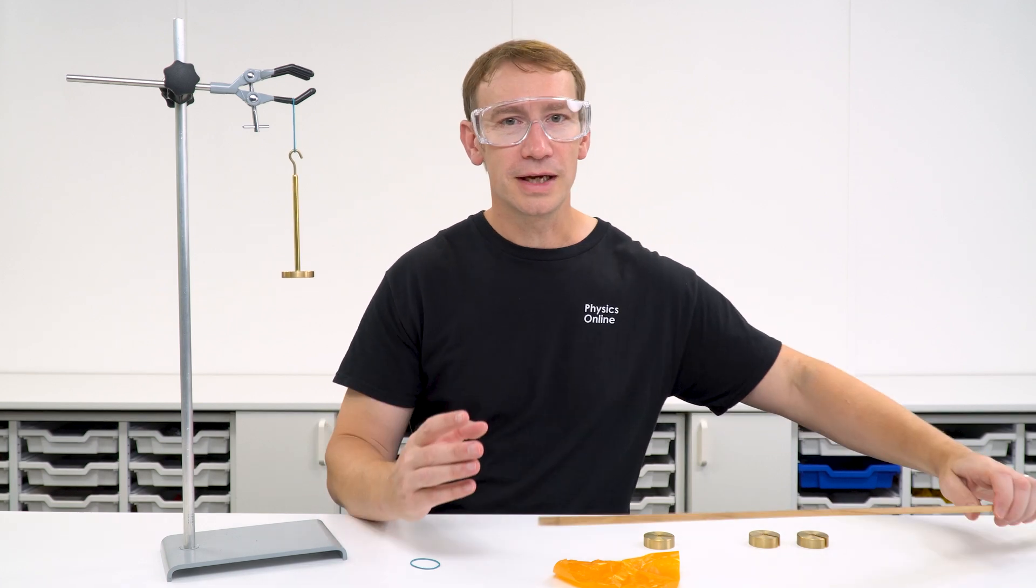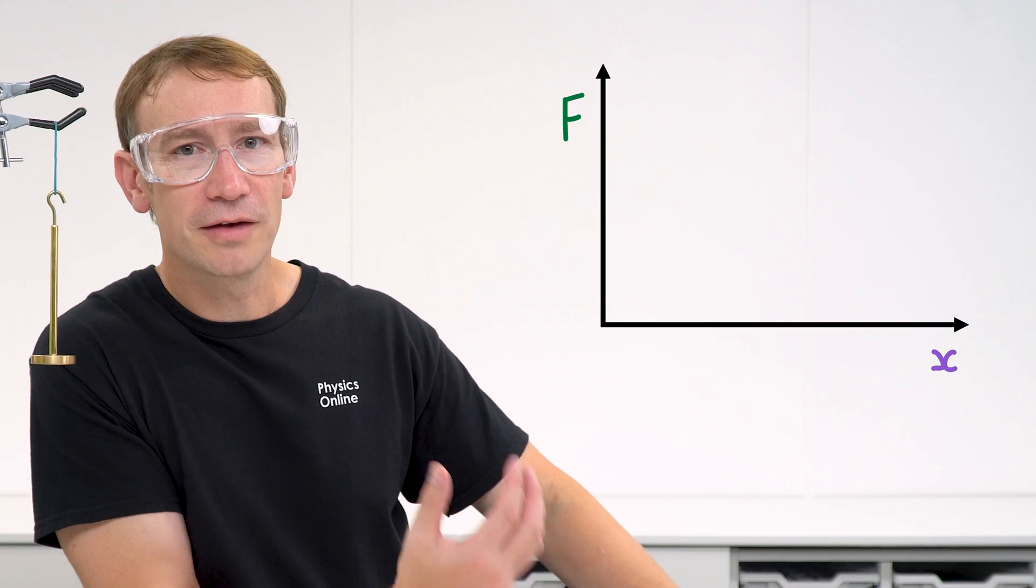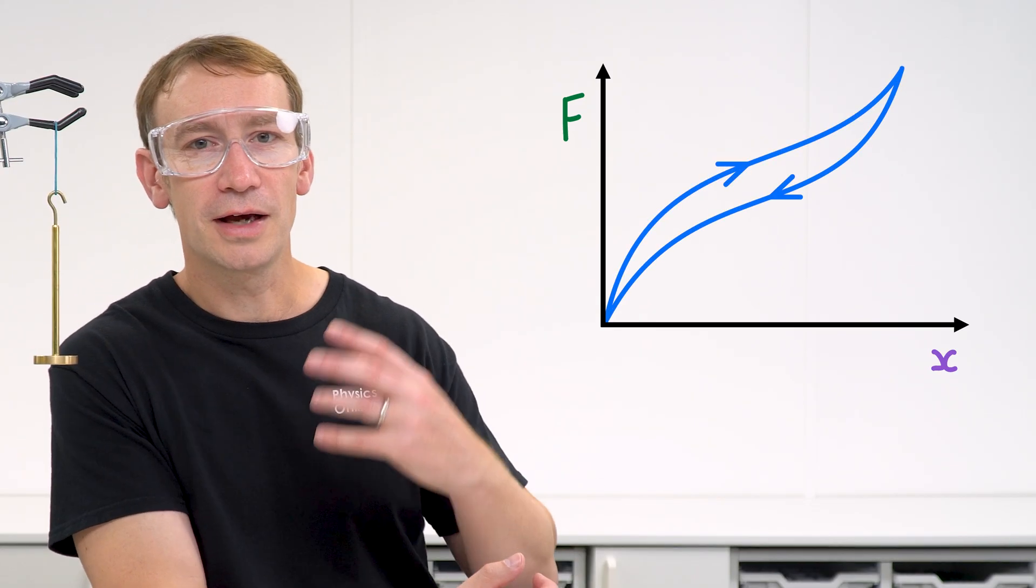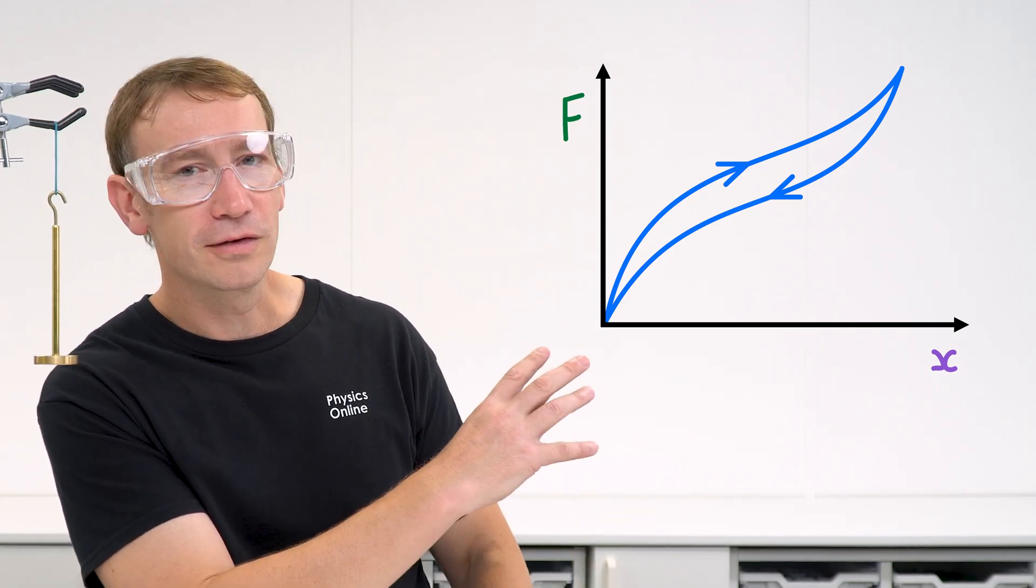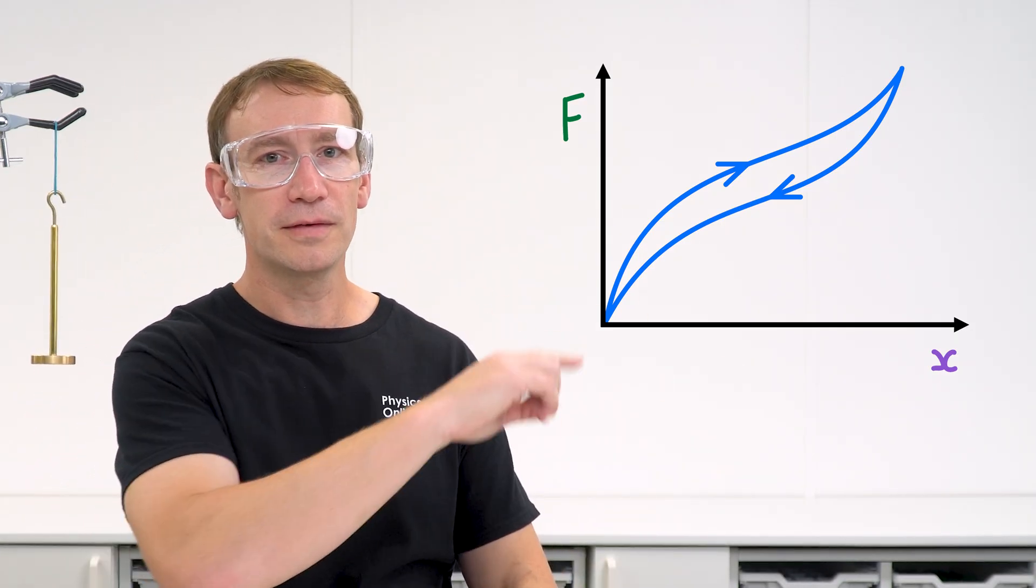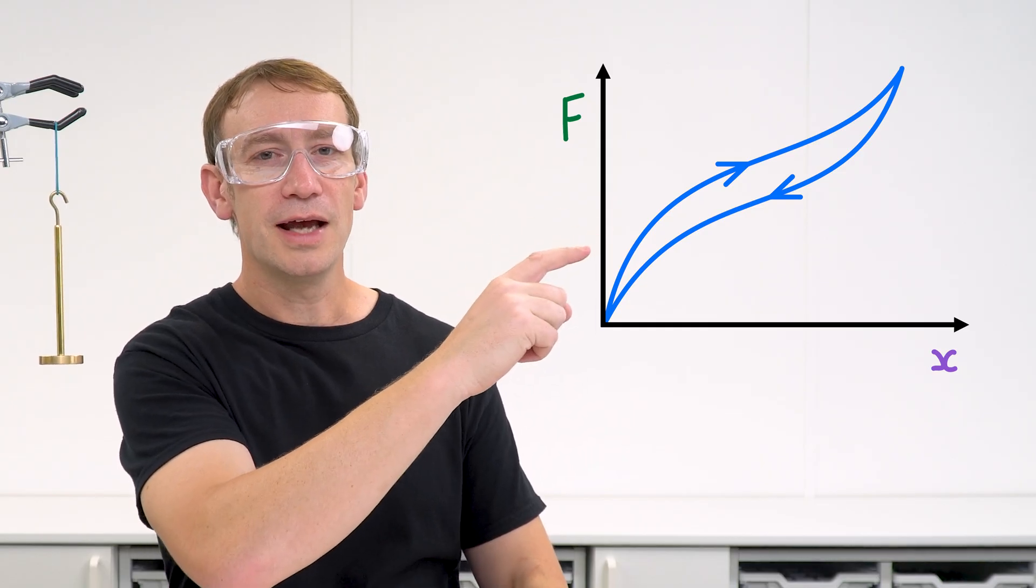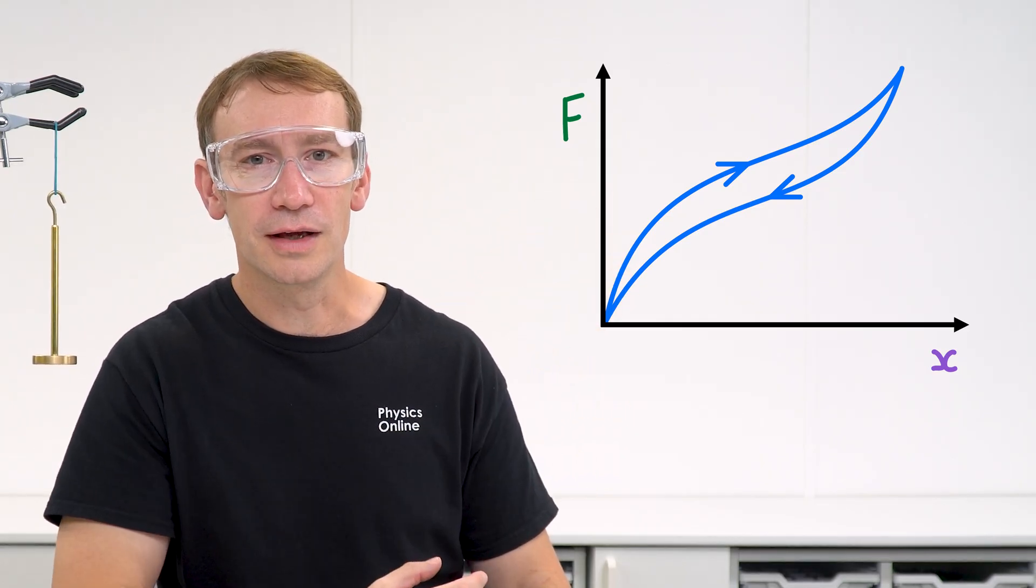But when you plot the data we're interested in the force being applied as it's loaded and unloaded and how that changes the extension. And what you might see is a graph that looks like this. We have this curved line as we're loading it and then we have a slightly lower curve as we're unloading it.